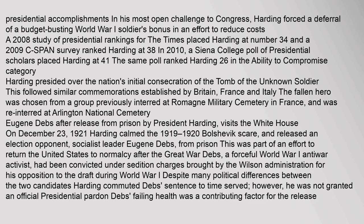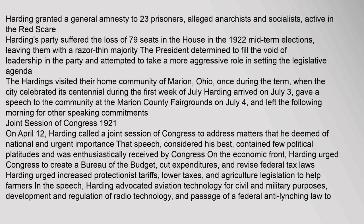Debs, a forceful World War I anti-war activist, had been convicted under sedition charges brought by the Wilson administration for his opposition to the draft. Despite many political differences, Harding commuted Debs' sentence to time served; however, he was not granted an official presidential pardon. Debs' failing health was a contributing factor for the release. Harding also granted a general amnesty to 23 prisoners, alleged anarchists and socialists, active in the Red Scare.